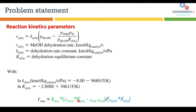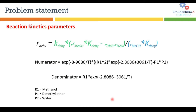In the next step, we substitute the values of small k and capital K from their temperature-dependent equations into the rate expression. After inserting these values, the green numerator expression becomes fully defined in terms of temperature.